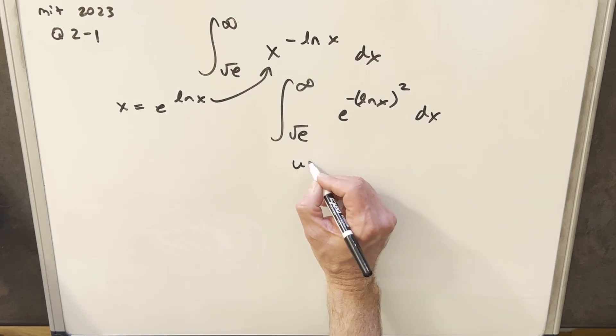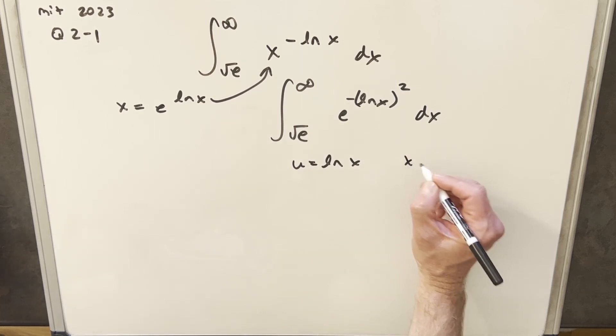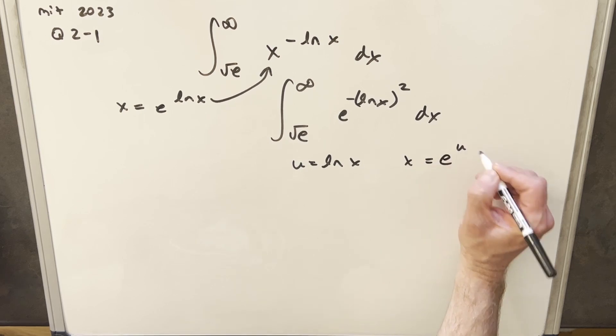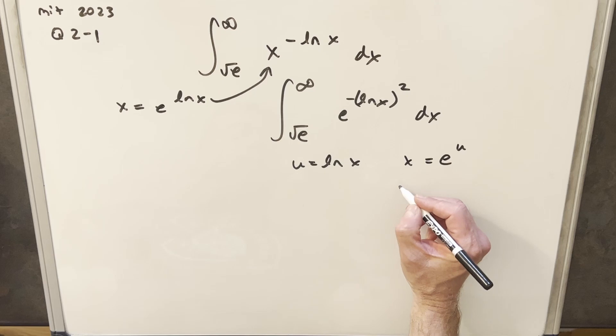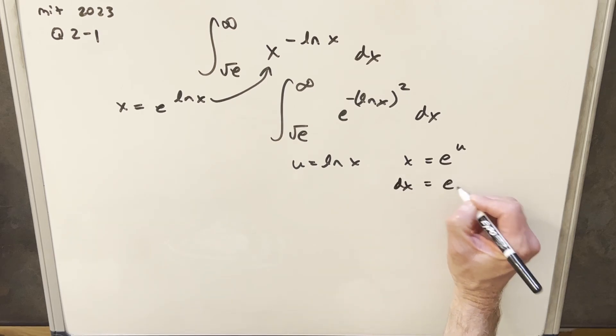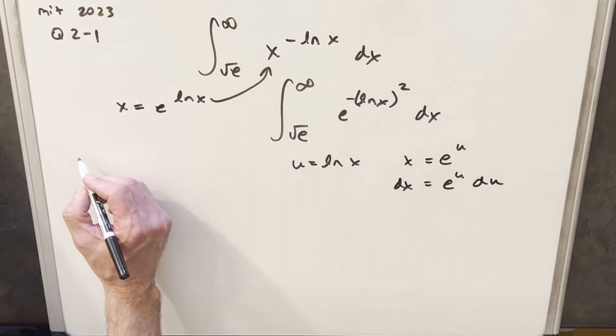So I'm going to make ln x my u, and then solving for x, we can write x as e to the u just by the properties of the logarithm. Then let's take our derivative here. So for dx, we're just going to have derivative of e to the u is e to the u du.